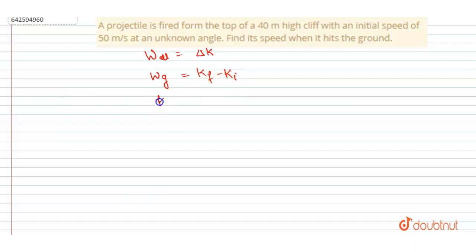So the final kinetic energy will equal the work done by gravity, that is mgh, plus initial kinetic energy. So write it as mgh plus half m u squared.